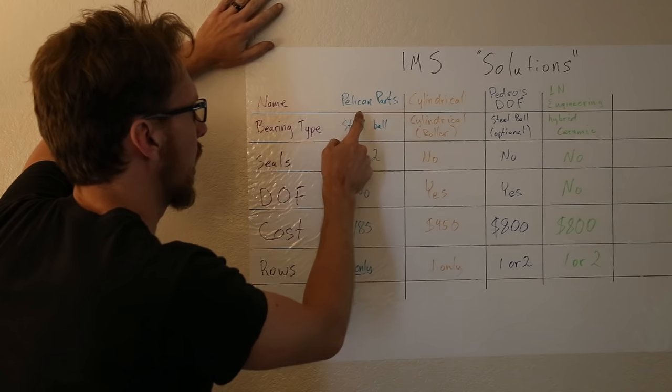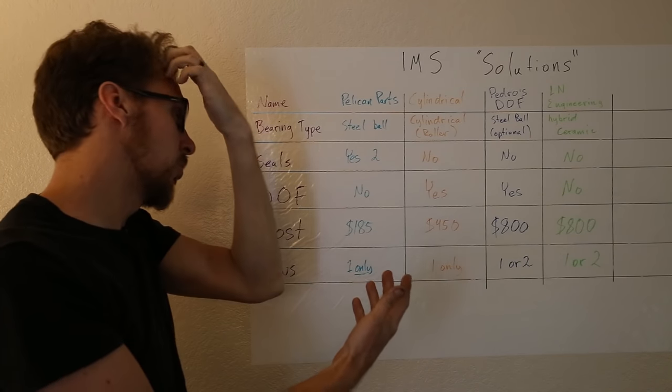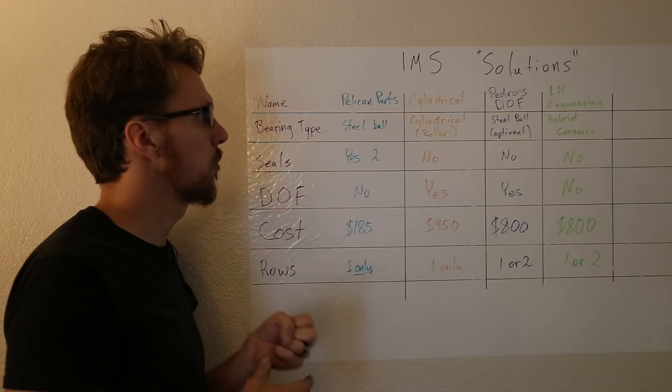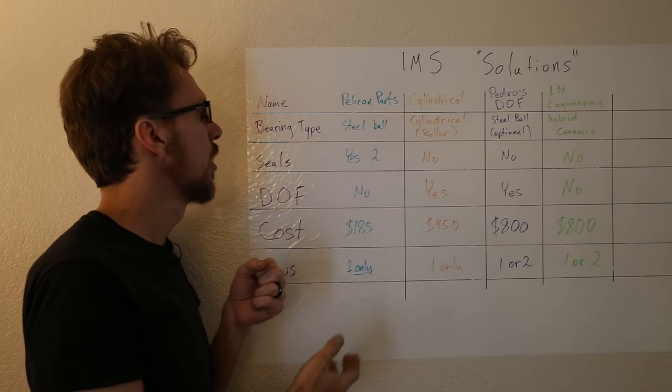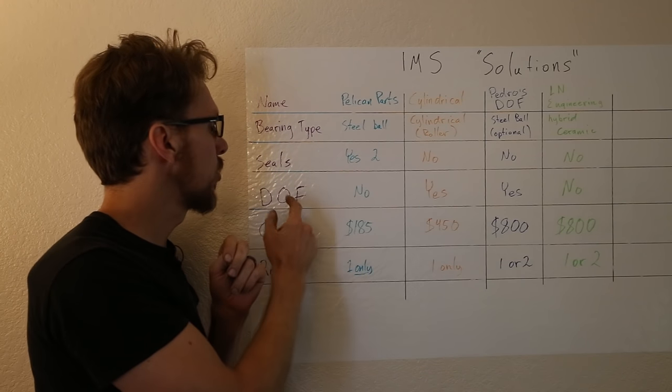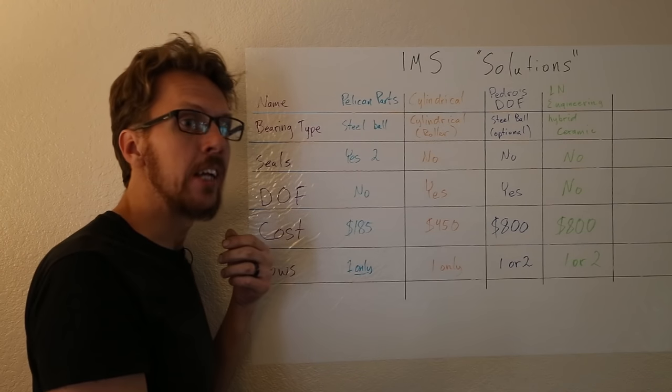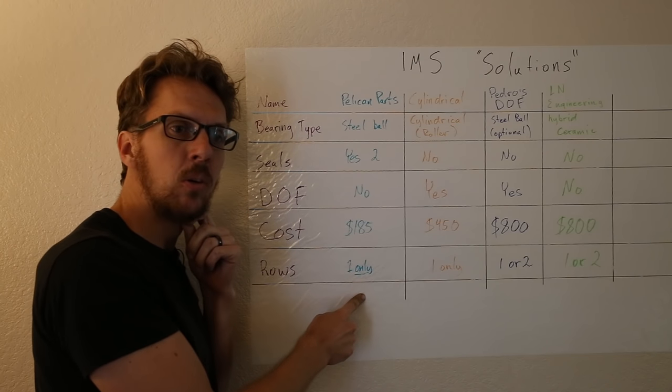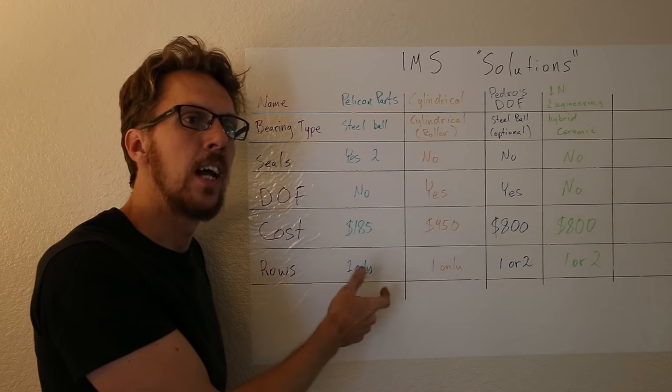So for the first solution, we have a kit by Pelican Parts. Basically what they tried to do is assemble a kit that was as close to the stock factory bearing as possible since Porsche didn't actually provide any Porsche branded replacement. They have a steel ball bearing that's very similar in spec to the original one. It has two rubber seals, just like the original one has. It doesn't have a direct oil feed. Its cost is pretty reasonable, $185, but it only comes in a single row version.